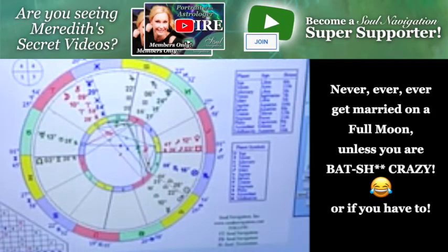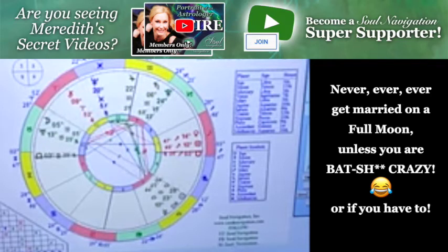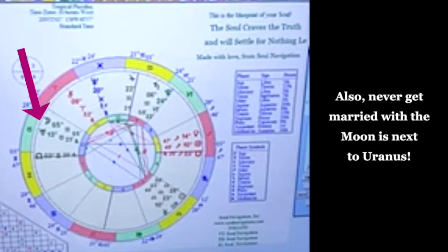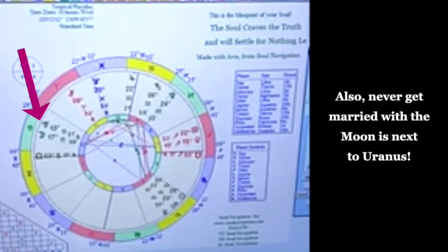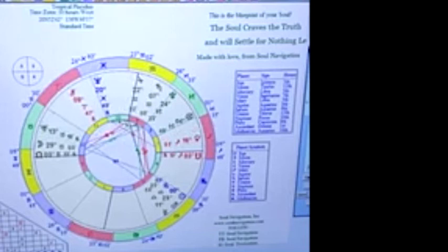The 18th, that's a full moon so no. And Uranus in the moon, never in the 12th. The 20th is not an option.